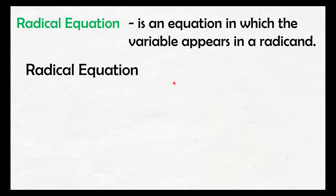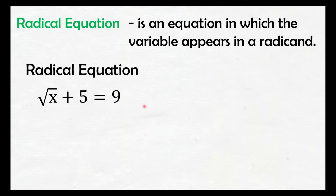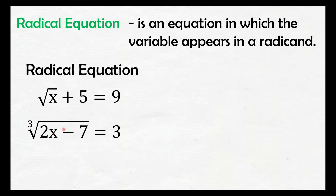Magbigay tayo ng mga example ng radical equation. Yung square root of x plus 5 equals 9 is a radical equation kasi meron tayong makikitang variable sa loob ng radical sign. Next is cube root of 2x minus 7 equals 3 — we can consider this as a radical equation since may variable na nakapasok sa loob ng radical sign. And ito naman, fifth root of x equals negative 3 — radical equation din ito kasi meron tayong variable sa loob ng radical sign.